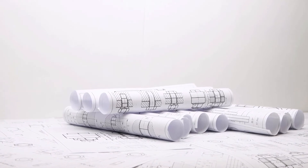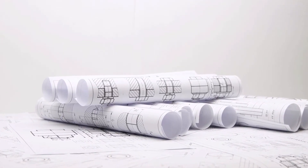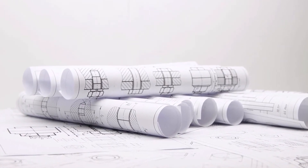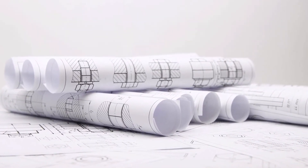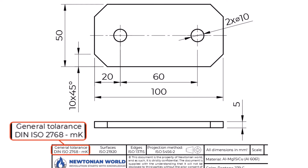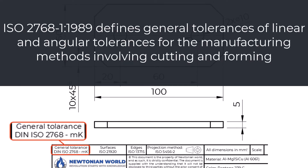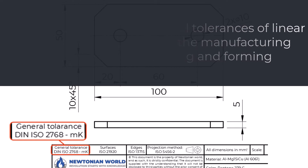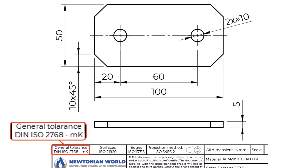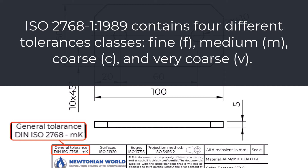General tolerances. In order to simplify and improve the clarity of the drawing and speed up the drafting process, we do not define every single tolerance on the drawing. We can refer to a tolerancing standard relevant to dimensions that do not have limit deviations called out — we usually refer to these as general tolerances. The general tolerances can be overridden by defining a local tolerance on the dimension. One standard we can use is ISO 2768-1:1989, which defines general tolerances of linear and angular tolerances for manufacturing methods involving cutting and forming. It contains four tolerance classes: fine (F), medium (M), coarse (C), and very coarse (V).